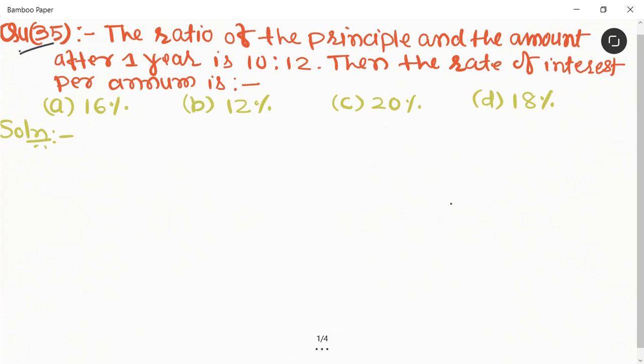Quantitative aptitude chapter simple interest, question number 35. The ratio of the principal and the amount after one year is 10 is to 12. Then the rate of interest per annum is which option? In this question, it is given that...